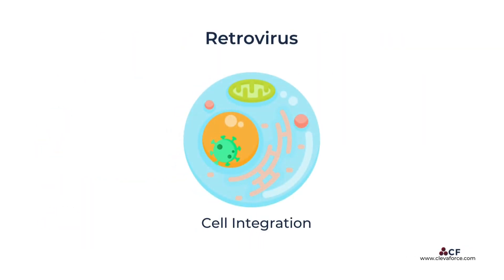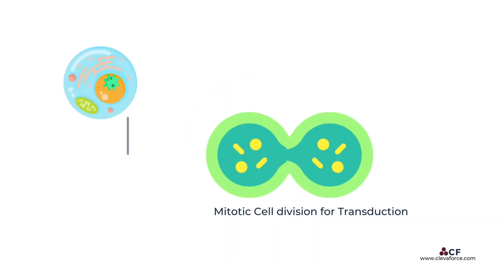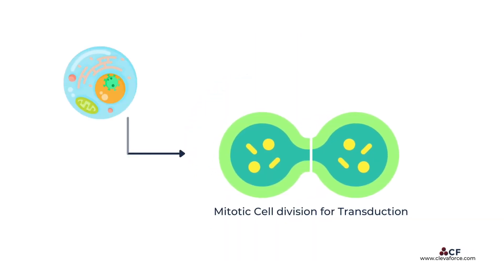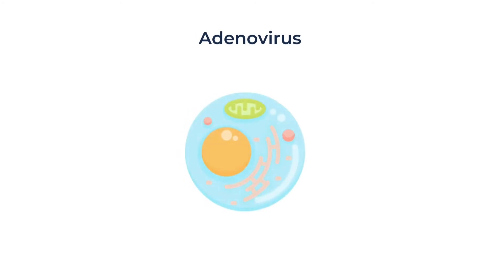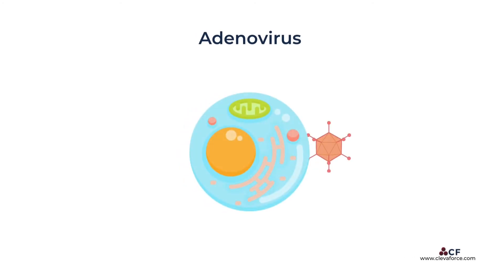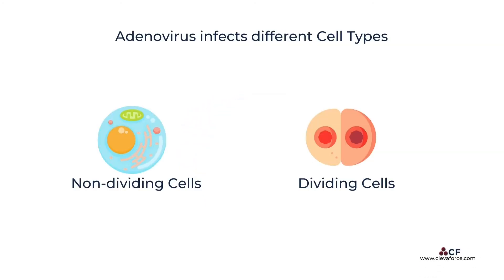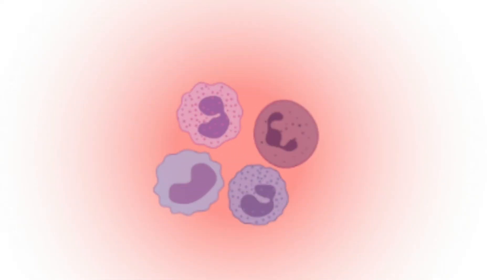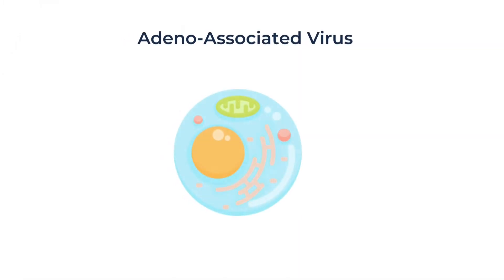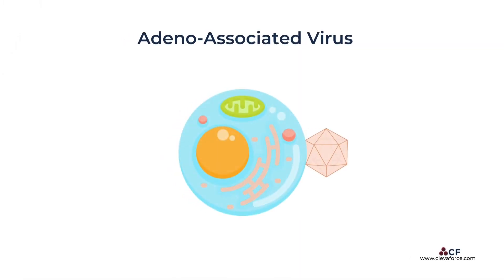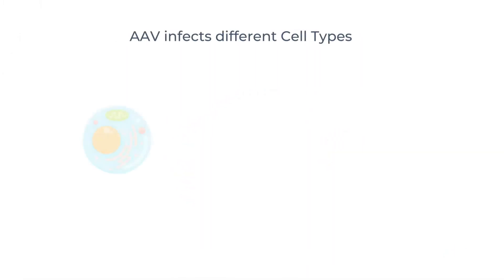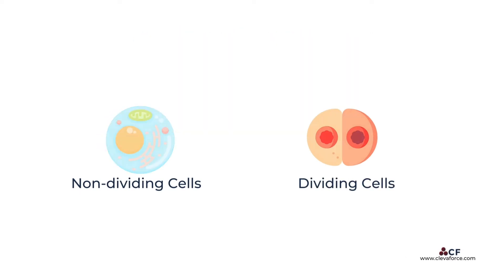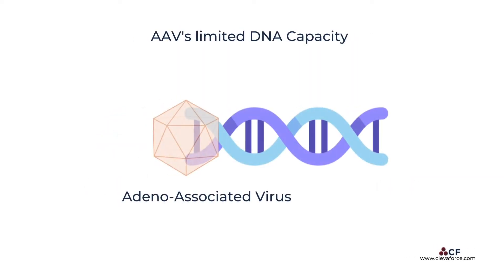Retroviral vectors can permanently integrate into the genome of the infected cell, but require mitotic cell division for transduction. Adenoviral vectors can efficiently deliver genes to a wide variety of dividing and non-dividing cell types, but immune elimination of infected cells often limits gene expression in vivo. Adeno-associated virus also infects many non-dividing and dividing cell types, but has a limited DNA capacity.